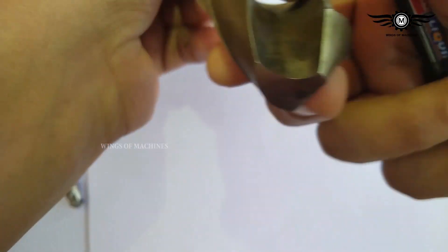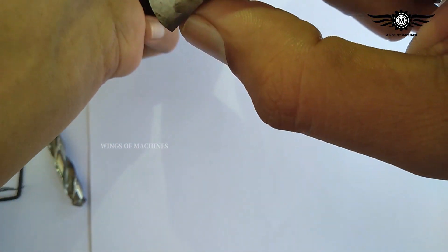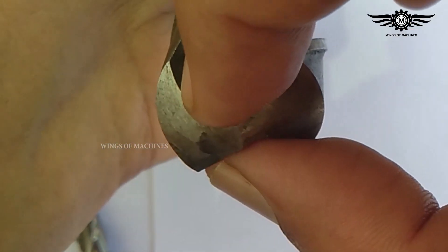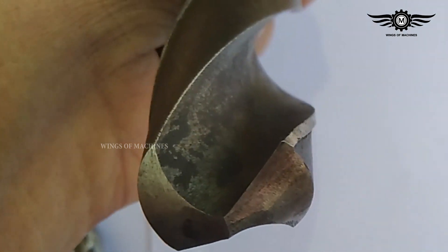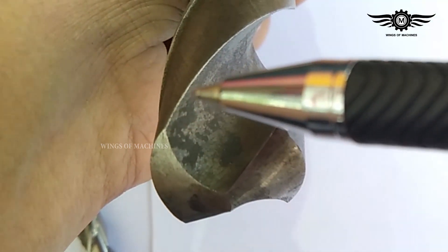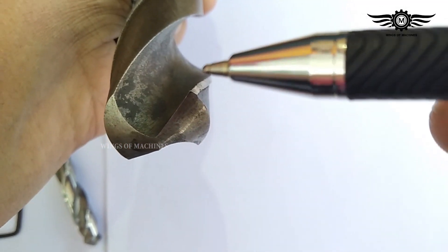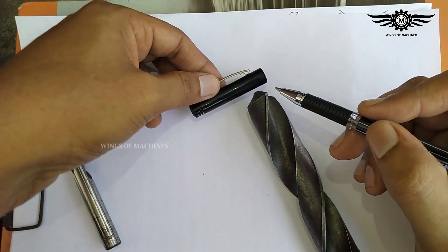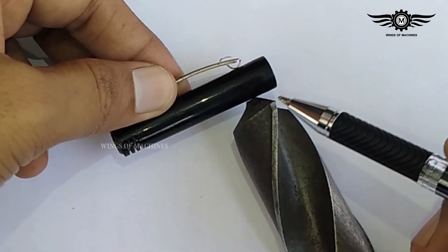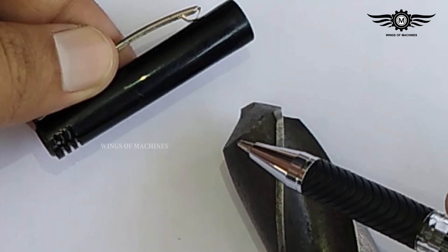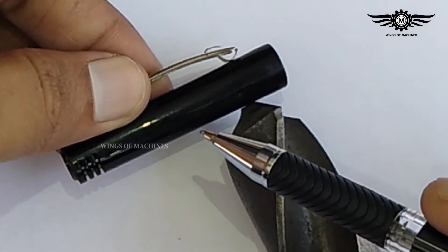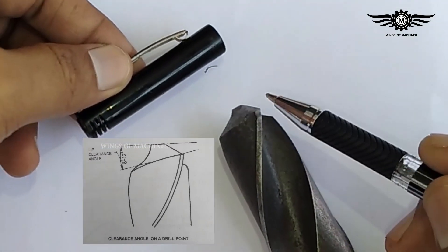This is the body clearance. This is the web — the central core of the drill connecting the two flutes. This is the web angle. This is the cutting lip and the lip clearance angle.